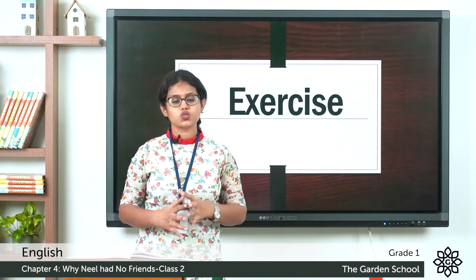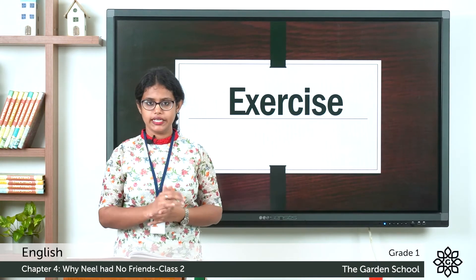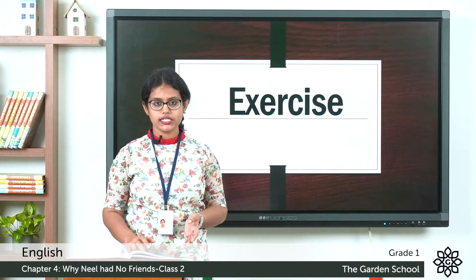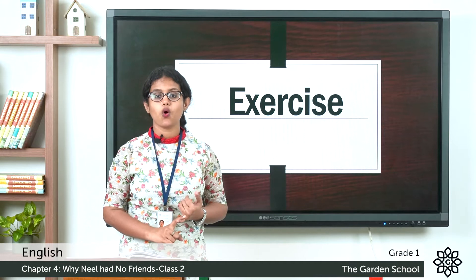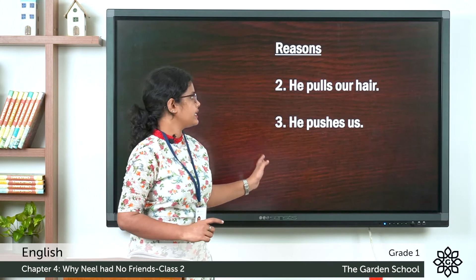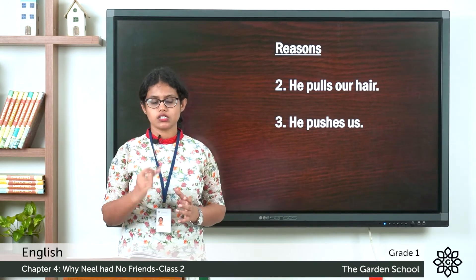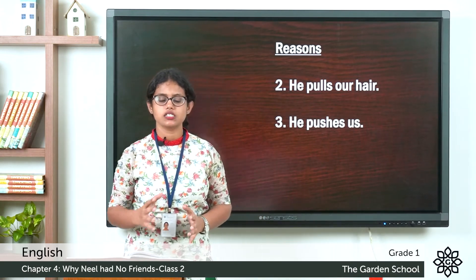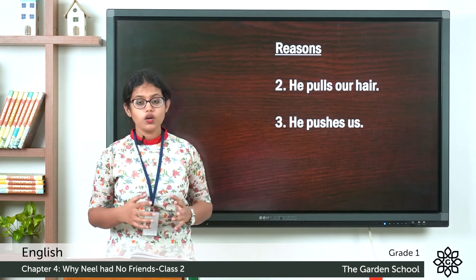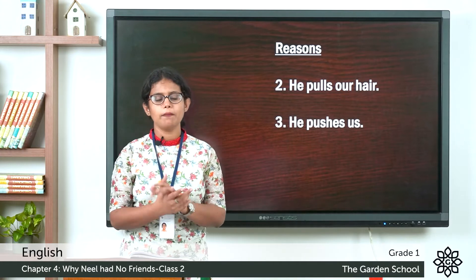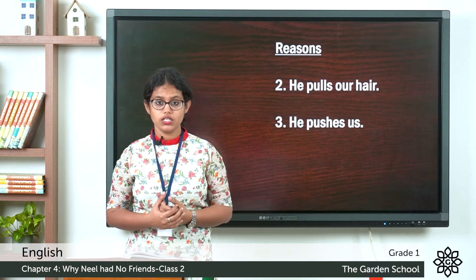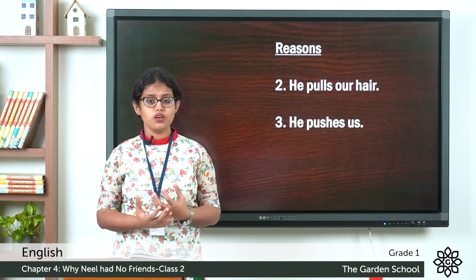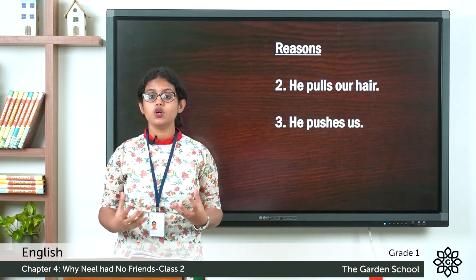Coming to the third exercise — in the story, three kids complained about Neil. You can see a box with Child 1, Child 2, Child 3 and the reasons. The first child said: he spoils our game. The second child said: he pulls our hair. The third child said: he pushes us. Write those sentences in the spaces given. The next question: what qualities do you need to make friends? You will look for someone who is friendly, sharing, and helpful. These are qualities we always look for in a friend.